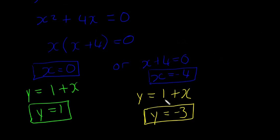So we have our two sets of coordinates there. When x = -4, y = -3. And when x = 0, y = 1.